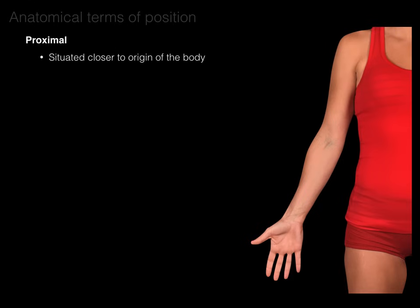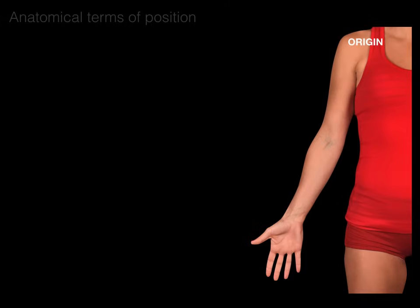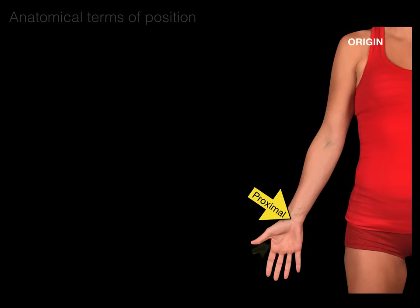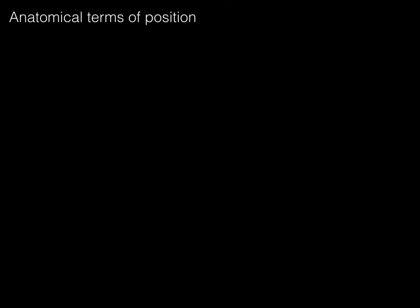Proximal means situated closer to the origin of the body. For example, the elbow is proximal to the wrist. And distal means situated farther from the origin of the body — the wrist is distal to the elbow. This is always taken from some point of origin. With regards to the limbs, it's the shoulder or hip. So the elbow is proximal and the wrist is distal, but we could also say the wrist is proximal compared to the palm of the hand, which is distal, or identify which bone of a digit is proximal and which is distal — always in relation to that origin.